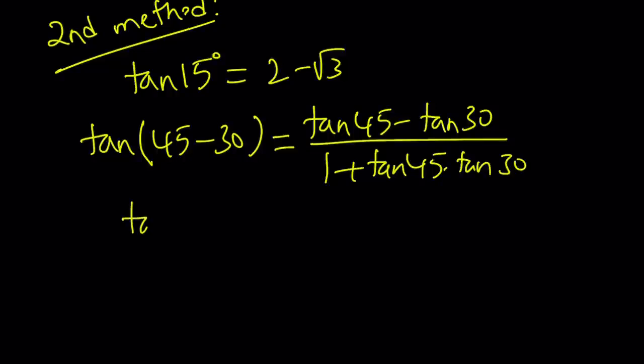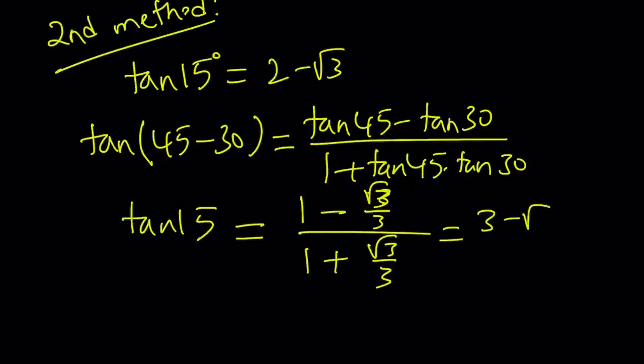Tangent 45, this is tangent 15 on the left-hand side. Tangent 45 is 1. Tangent 30 is square root of 3 over 3. Or you can write it as, you know, it doesn't really matter. No big deal. I guess square root of 3 over 3 is fine. And then the bottom is going to be 1 plus 1 times the square root of 3 over 3. Here we go. Multiply the top and the bottom by 3 and you get 3 minus root 3 divided by 3 plus root 3.